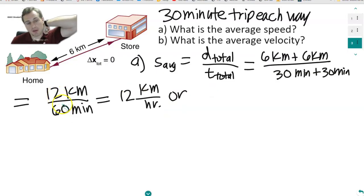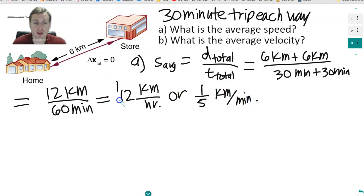So that's 2 over 10, or 1 over 5. So 1 over 5, 1 fifth of a kilometer per minute. Either way is a correct answer. By the way, 1 fifth of a kilometer per minute, that would be, there's a thousand meters in a kilometer, so that would be 200 meters per minute. And there's other ways you could write this.